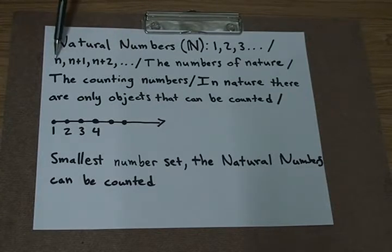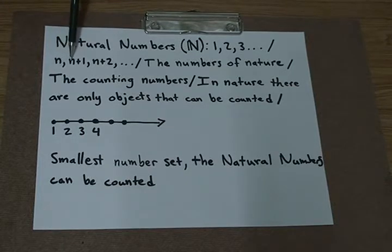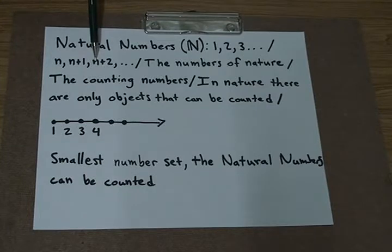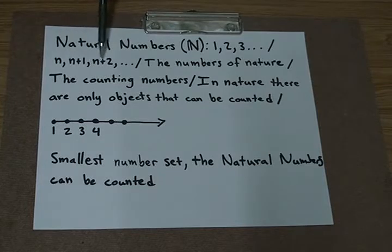So we can just imagine, or plug in any number we want for n. Let's just use the example of 5. If n is 5, 5+1 is 6, 5+2 is 7, 5+3 is 8. So it would be 5, 6, 7, 8, and it would go in order, counting it.